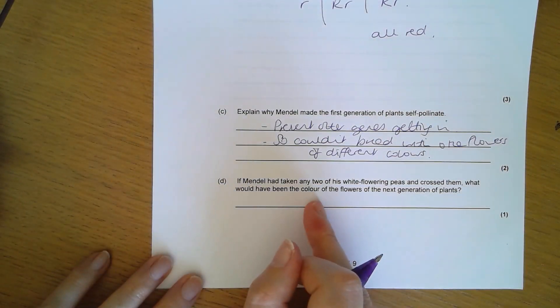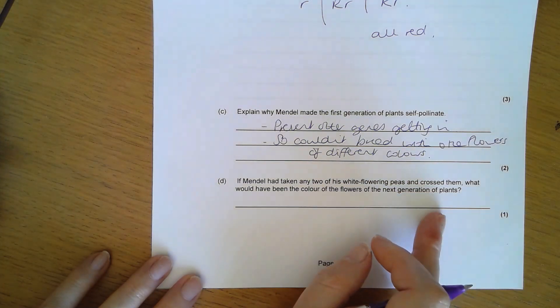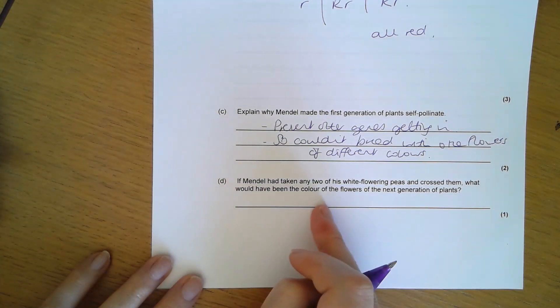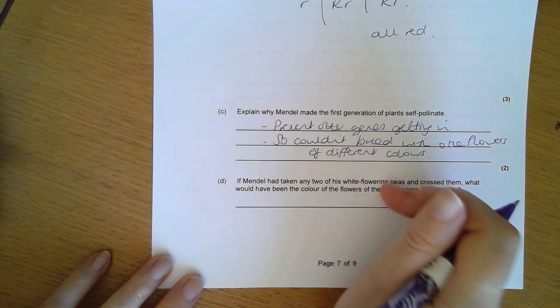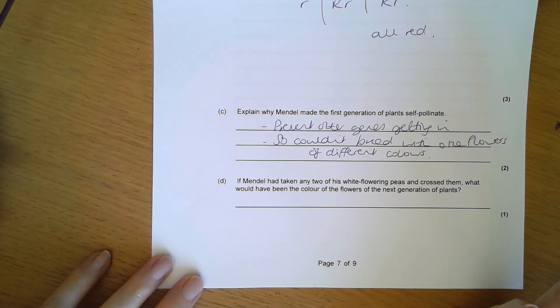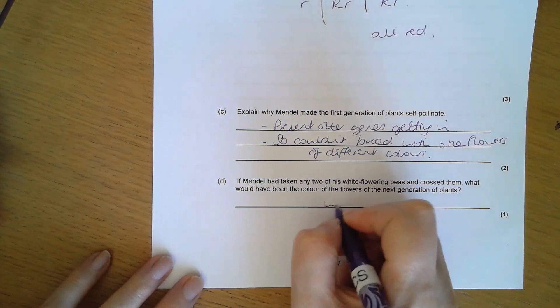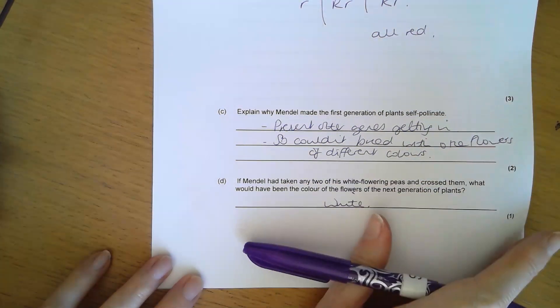If Mendel had taken any two of his white flowering peas and crossed them, what would have been the colours of the flowers? White were recessive, so any white flowers must have two little r's. The next generation could only be white because they would only have white alleles.